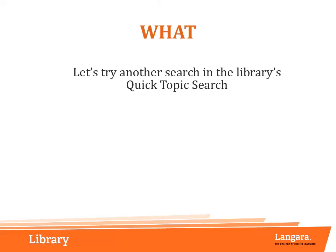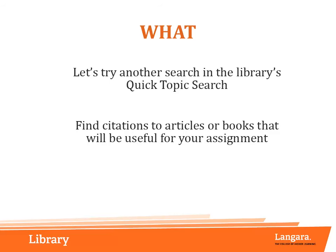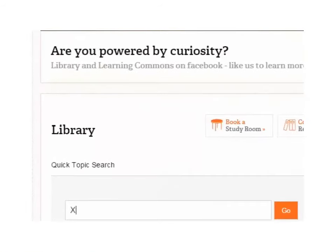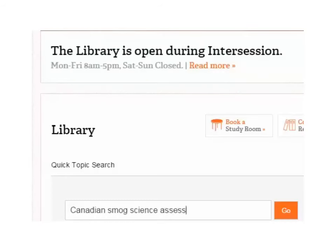Let's try another search in the library's Quick Topic Search. As you do your research, you may find citations to articles or books that will be useful for your assignment. This time, let's say we know of a government report called Canadian Smog Science Assessment Highlights and Key Messages that will be of use to us, and we'd like to see if it's available through the library. You can use the library website to see if Langara has access to the source online or in the print collection.